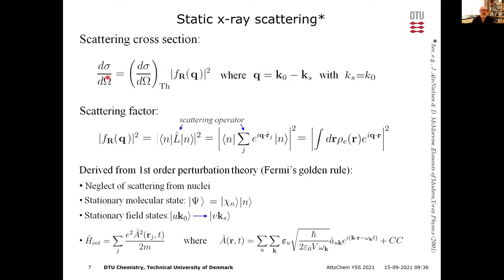The existing textbooks all describe static X-ray scattering: the scattering cross section at some solid angle equals scattering from one electron times the scattering factor — the electronic matrix element of the scattering operator — which works out to be the Fourier transform of the electron density. You get a picture of the electron density from the scattering signal.